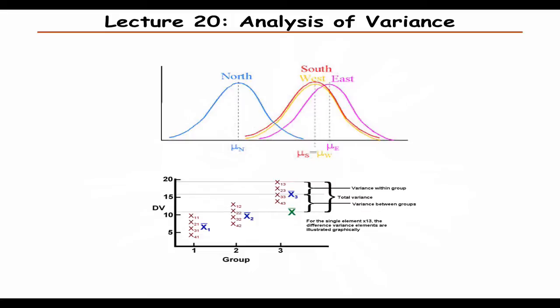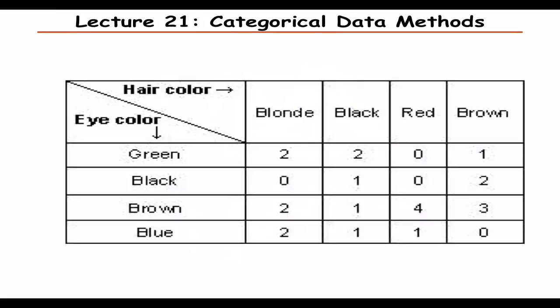Then back to statistics — ANOVA, which is a more general form of the t-test, applying to many different groups. Then categorical data methods: when you have different categories and want to see whether there is any correlation between them, you'll learn how to apply those methods.